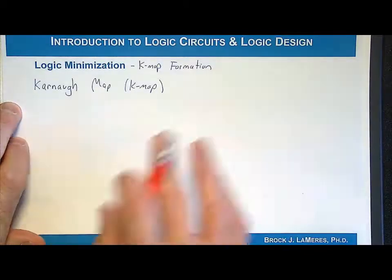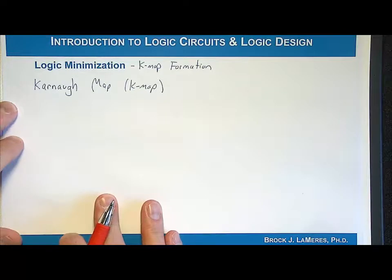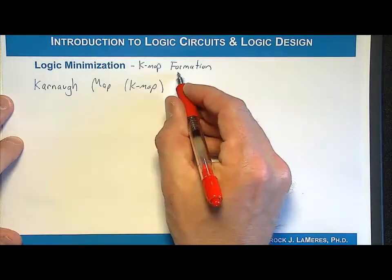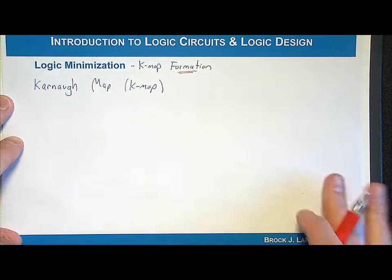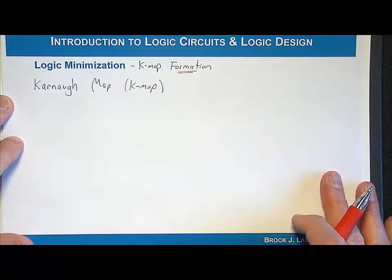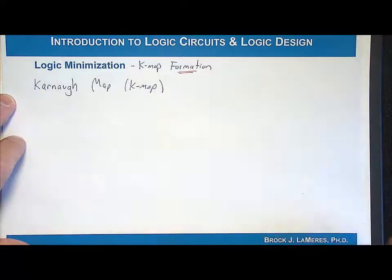To begin with, we have to look at the formation of a Karnaugh map. When we talk about formation, we're simply talking about taking a truth table and putting it into K-map form. We're not going to start with how you actually do the minimization — we have to form the K-map first, and then we look at the minimization.